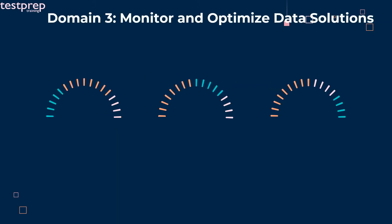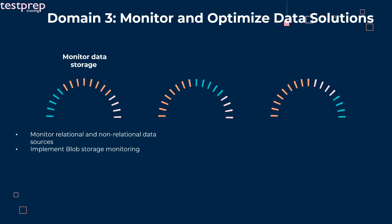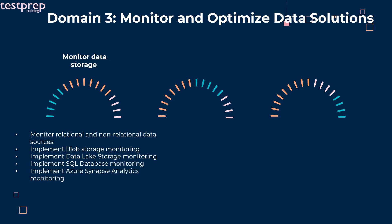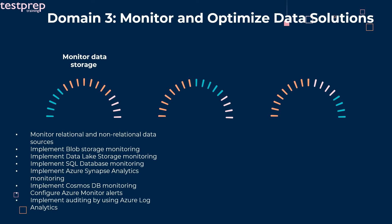Third major section: monitor and optimize data solutions. Number one: monitor data storage. It contains eight subtopics. First, monitor relational and non-relational data sources. Second, implement blob storage monitoring. Third, implement data lake storage monitoring. Fourth, implement SQL database monitoring. Fifth, implement Azure Synapse Analytics monitoring. Sixth, implement Cosmos DB monitoring. Seventh, configure Azure Monitor alerts. Eighth, implement auditing by using Azure Log Analytics.